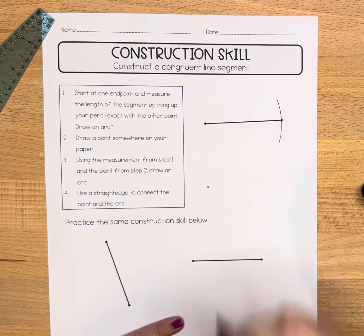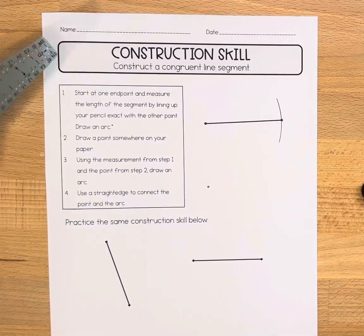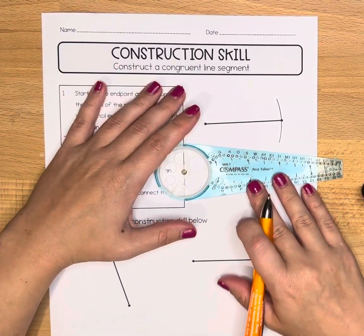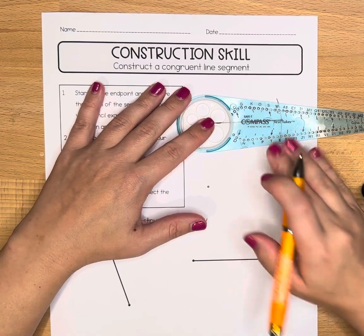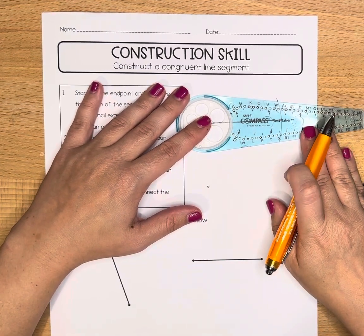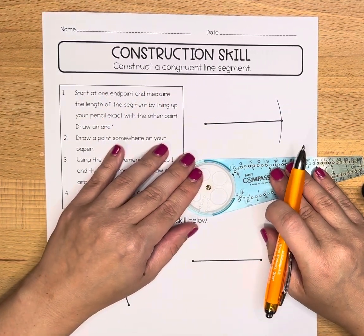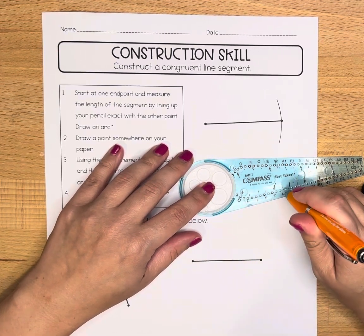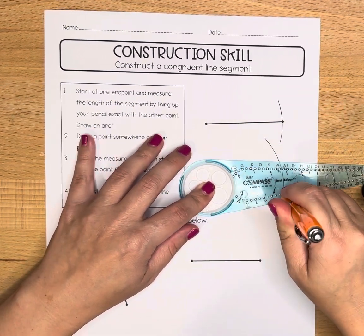Now we're going to draw a point somewhere else on the page. I remember when we had this one here and we determined what measurement we were going to use. Now we're going to use that same measurement, and I'm going to make another arc.